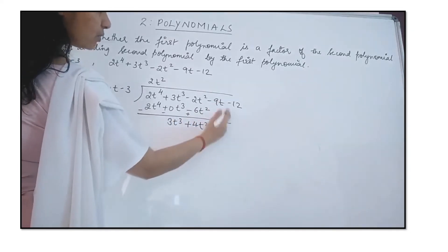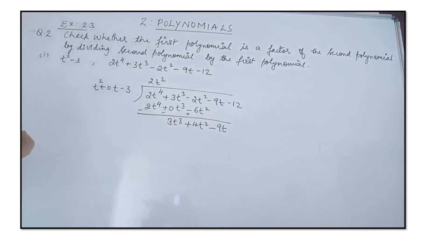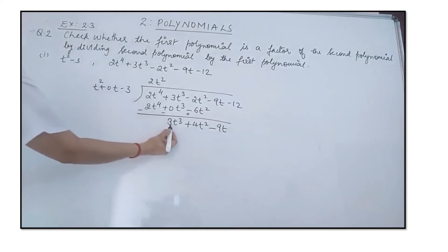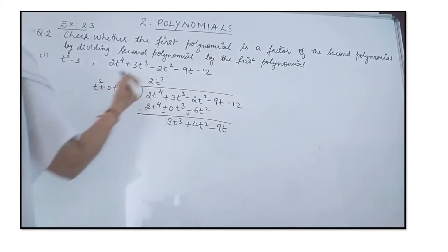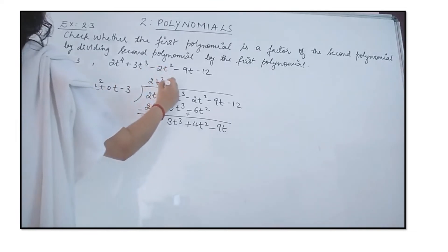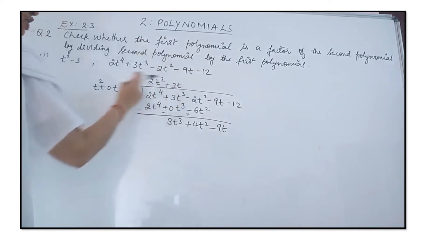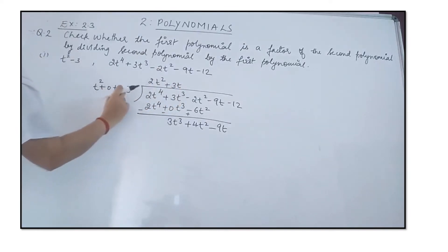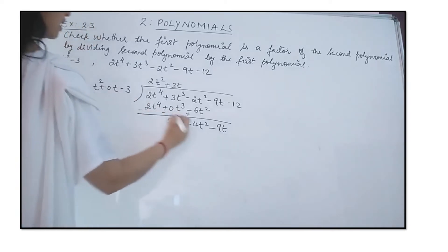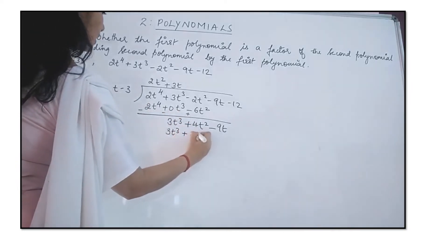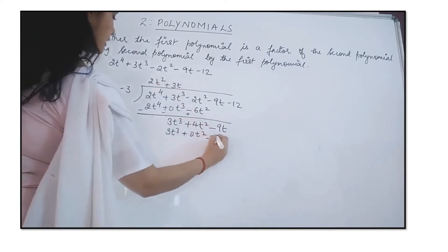We take down the next term, which is −9t. Now the same procedure follows: 3t³ divided by t² gives +3t, which is written in the quotient. Multiplying +3t with the divisor gives 3t³ + 0t² − 9t.